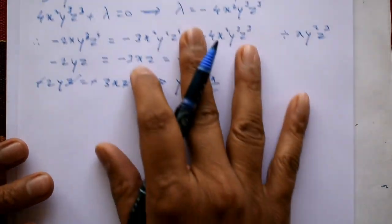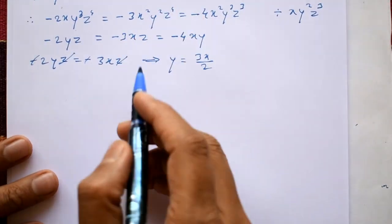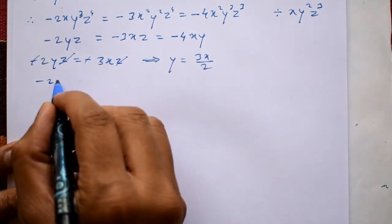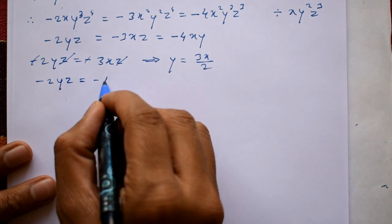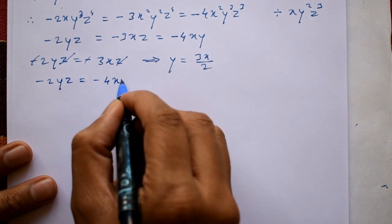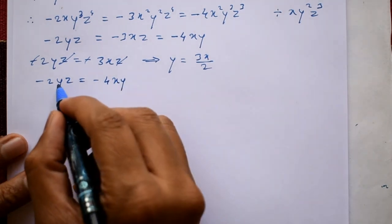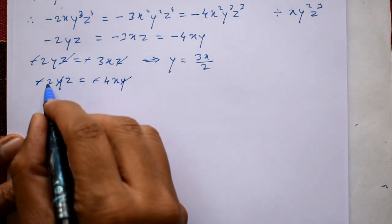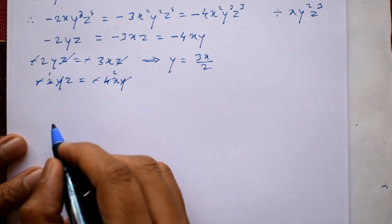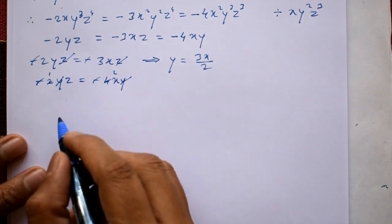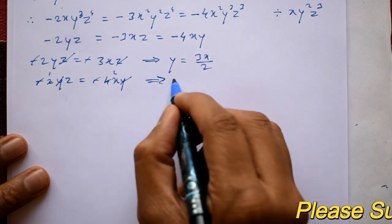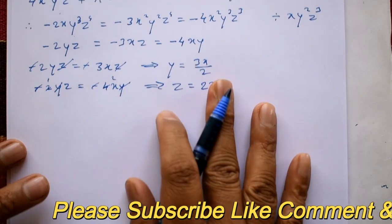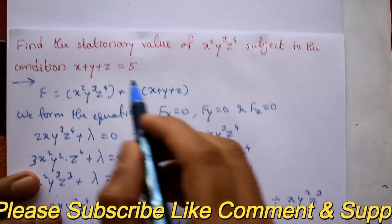Taking the first and last equations: minus 2yz equals minus 4xy. Cancelling the negatives and y from both sides, 2z equals 4x, so z equals 2x. We now have y and z in terms of x.